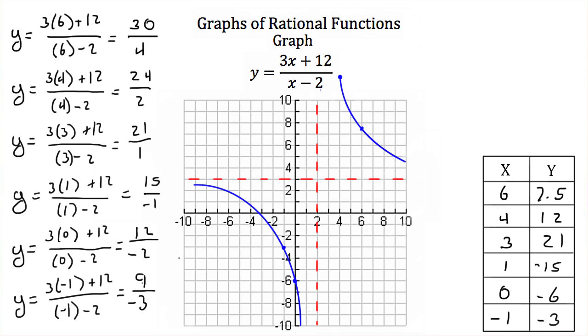Notice that we're approaching our asymptotes on each side. And this kind of looks like a reciprocal function. So now that we've graphed this rational function, we have completed the tutorial on graphs of rational functions.